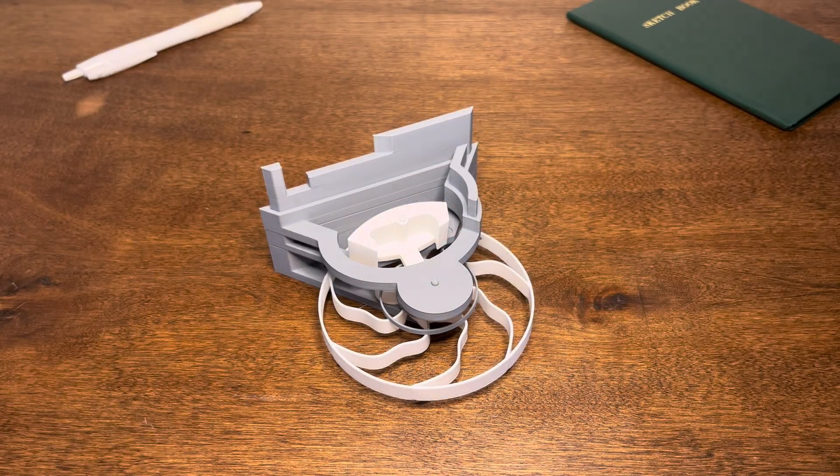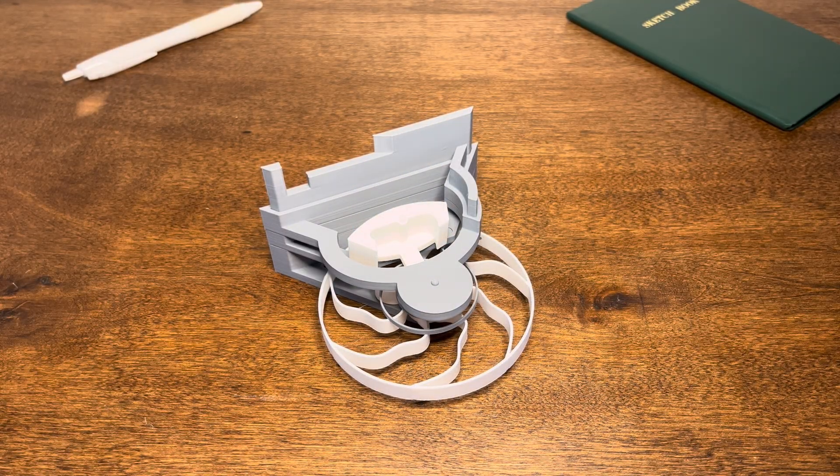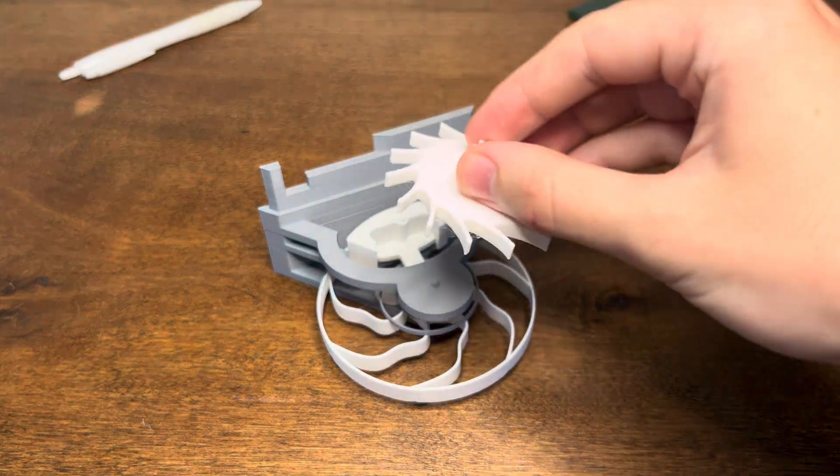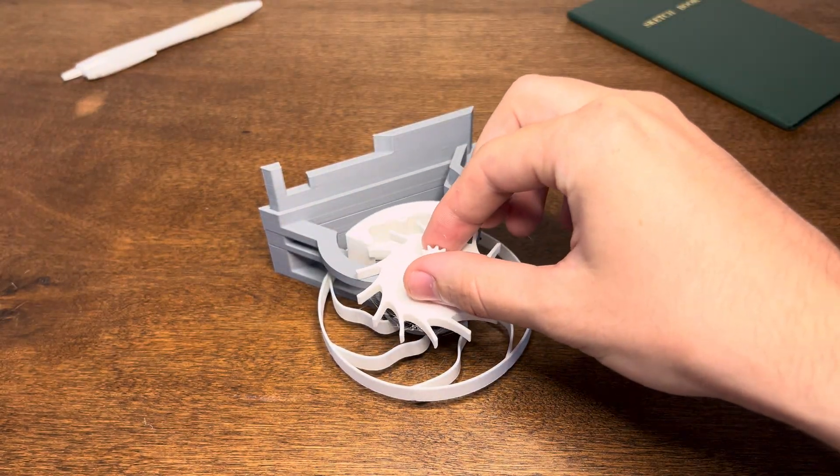Here's the pallet fork. So this is what controls the release of the motion. And balancing that pallet fork is the tricky part. So here's the escapement wheel. Just slot this right on there.